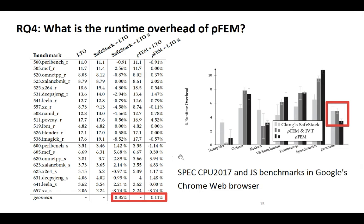Finally, we wanted to find out what is the runtime overhead of RAWFAM. For this we used the SPEC CPU 2017 benchmark. We compiled the programs and compared SafeStack plus LTO against RAWFAM plus LTO, and observed that in both cases we have under one percent overhead, making our tool very competitive. We also used six JavaScript benchmarks with the Chrome browser, compiled the browser with our tool, executed the benchmarks, and in all six cases in geomean we have around three percent runtime overhead, which makes our tool very competitive and usable in production.